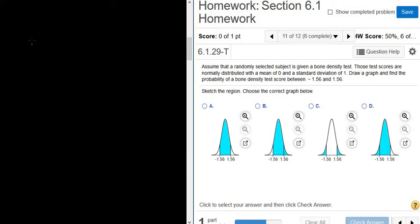So this is one of the between probabilities. So x is between, then here we have negative 1.56, then here we have 1.56. That's what the between probability looks like.